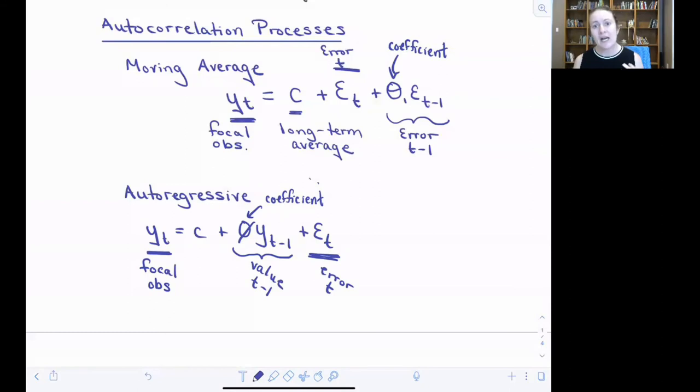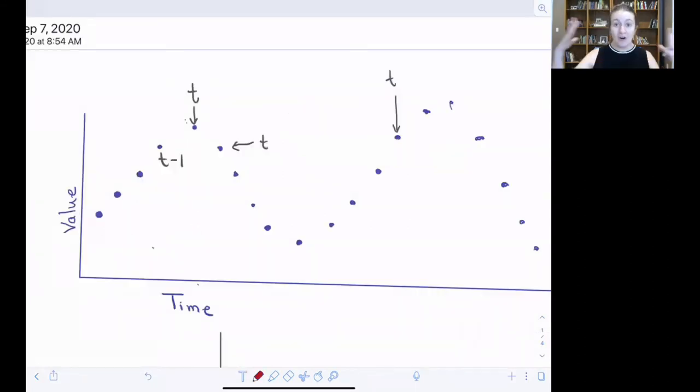You can see how the type of information brought from the past is very different information being used to explain a value in the future. What is probably less clear is why that pattern of autocorrelation is so different in the autoregressive version as opposed to the moving average version. Let's look at our example time series and think about how this correlation between values can amplify through a time series.